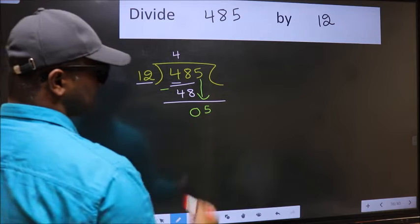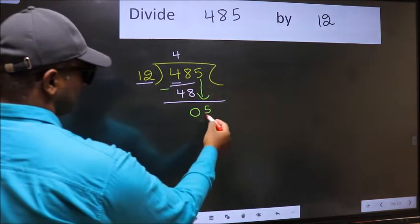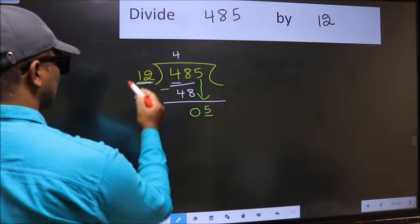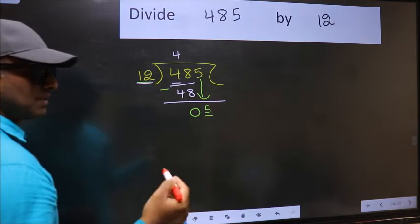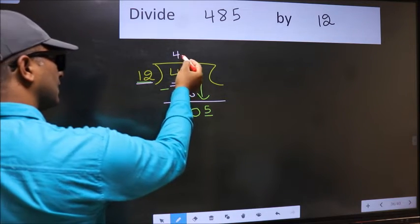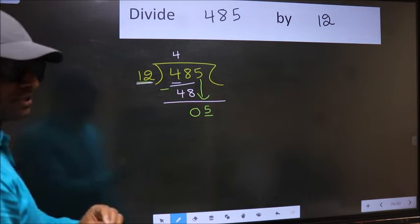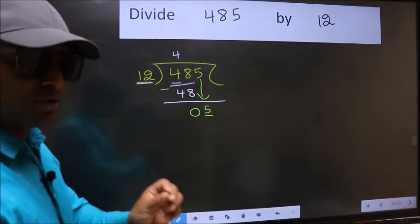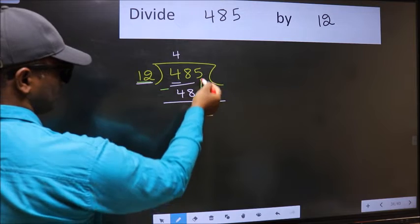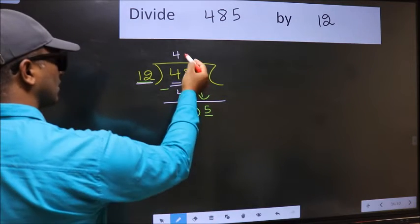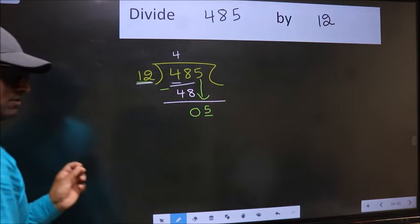After this step, the mistake happens. And the mistake is this: here we have 5 and here 12. 5 is smaller than 12. So what many do is they directly put dot and take 0, which is wrong. Why is it wrong? Because just now you brought this number down, and in the same step you want to put dot and take 0, which is wrong.